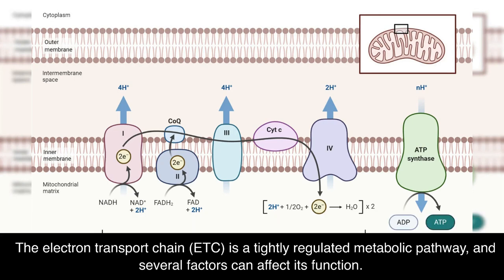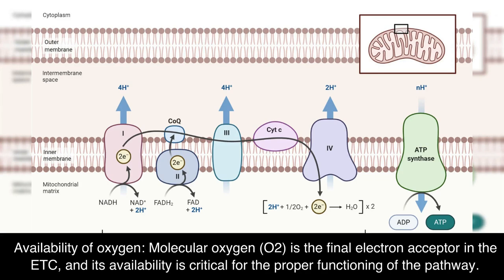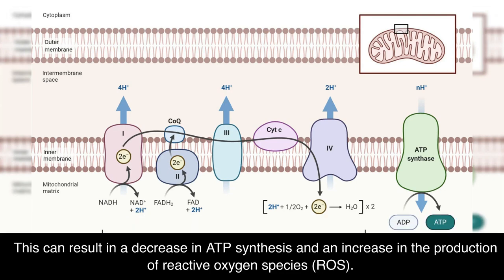The ETC is a tightly regulated metabolic pathway, and several factors can affect its function. First, availability of oxygen: molecular oxygen, O2, is the final electron acceptor in the ETC, and its availability is critical for the proper functioning of the pathway. In the absence of oxygen, the ETC cannot transfer electrons to O2, leading to a buildup of electrons and a reduction in the proton gradient across the inner mitochondrial membrane. This can result in a decrease in ATP synthesis and an increase in the production of reactive oxygen species (ROS).